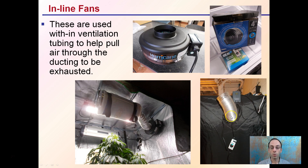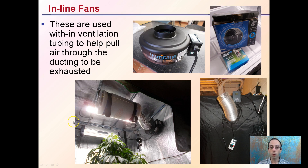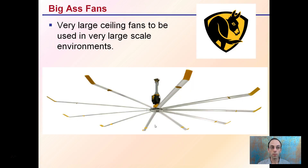I also have a variable speed controller, which is good for regulating how much air is being exhausted. Since this is a relatively small grow tent — four feet by two feet — a four-inch fan should be sufficient for this area.